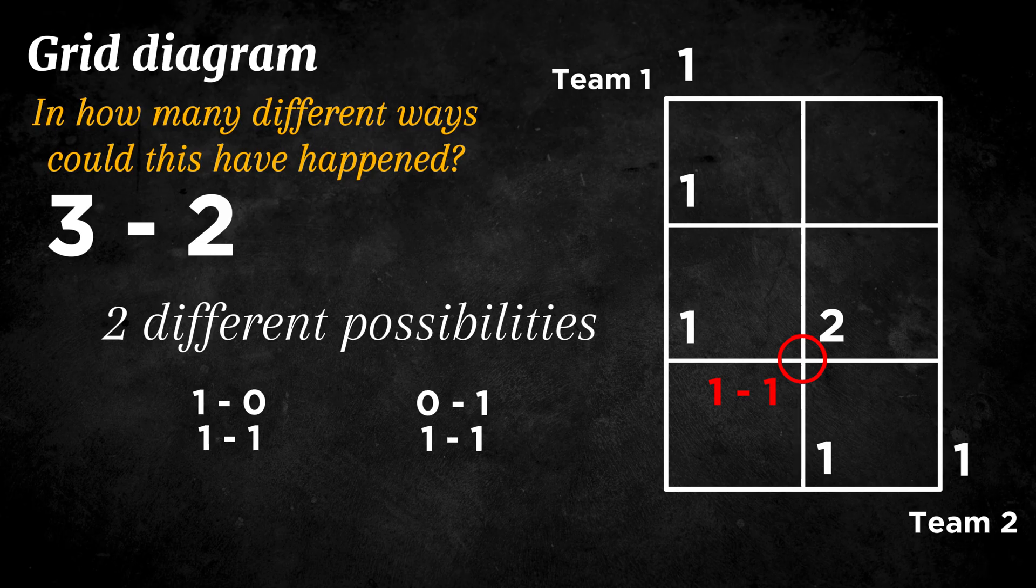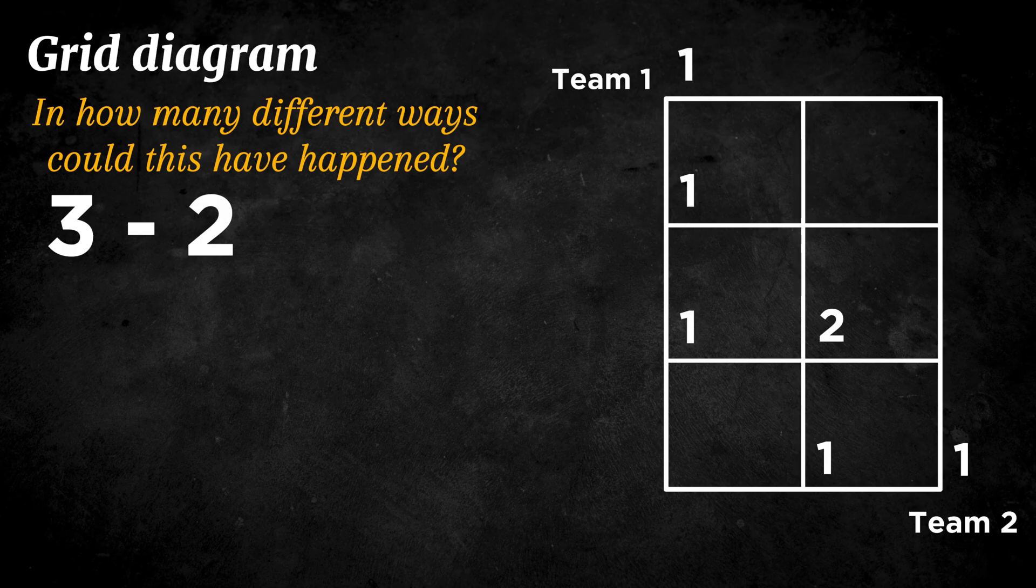To make filling in the grid easier, we do not have to think through every possibility one by one. Instead, we can simply add the number directly below and the number directly to the left. The sum of those two gives us the new number for that grid position.